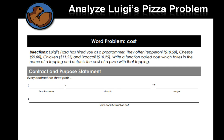So on your paper, you can write along as I go through these. So we're going to do the contract and purpose statement, just like we always do. So every contract has three parts. The function name, which we put in right at the beginning before the colon. The domain, so the domain is going to be a string, and the range is going to be a number, right? Because write a function called cost, which takes in the name of a topping, and a name is going to be a string, and it outputs the cost of a pizza with that topping.